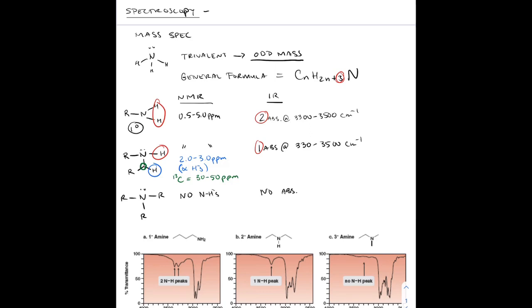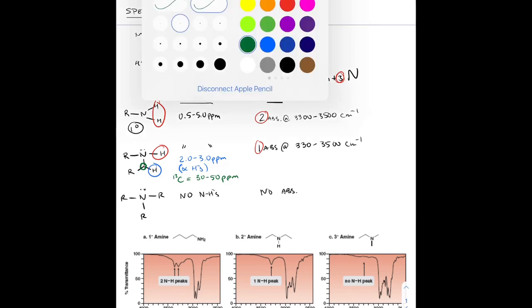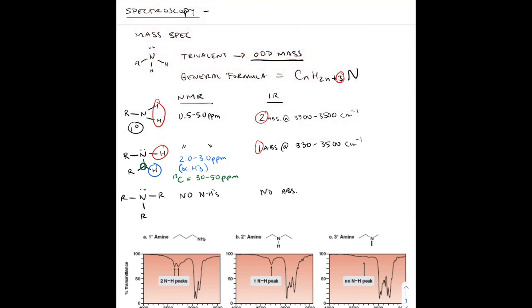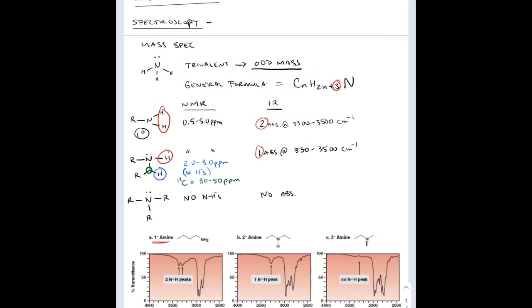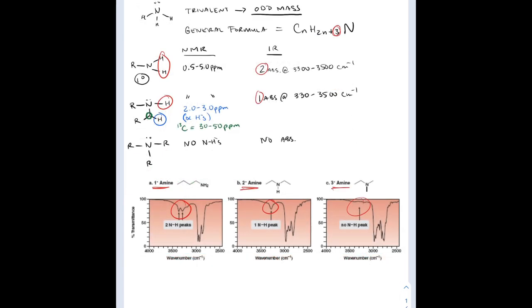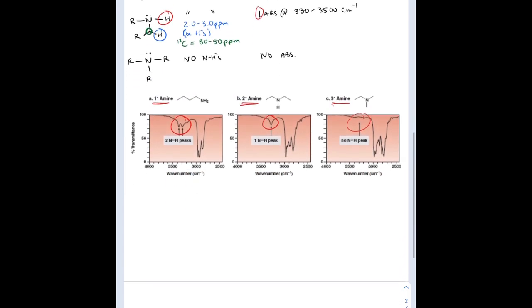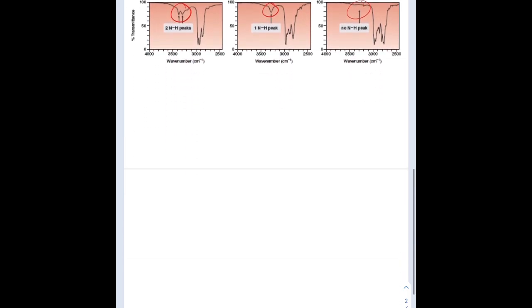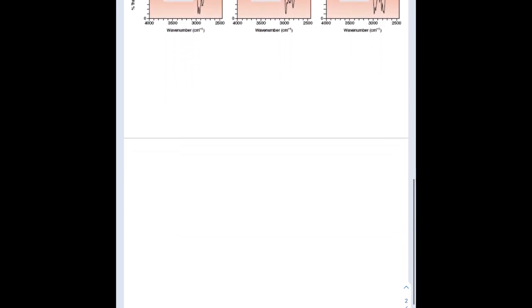Let's take a look at what we mean by those two absorptions, one absorption, and no absorptions for the primary, secondary, and tertiary amine. You can see the circled portions are two stretches, one stretch, and no stretch. It's pretty straightforward.